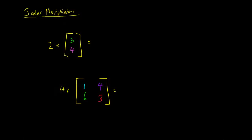Hey guys, so in this video we're going to have a look at scalar multiplication. When we're looking at scalar multiplication we're talking about our matrices and we're talking about multiplying them just by a constant. So we're not talking about multiplying two matrices together. What we're talking about is saying if we have this number out the front, which is what we call a scalar quantity.